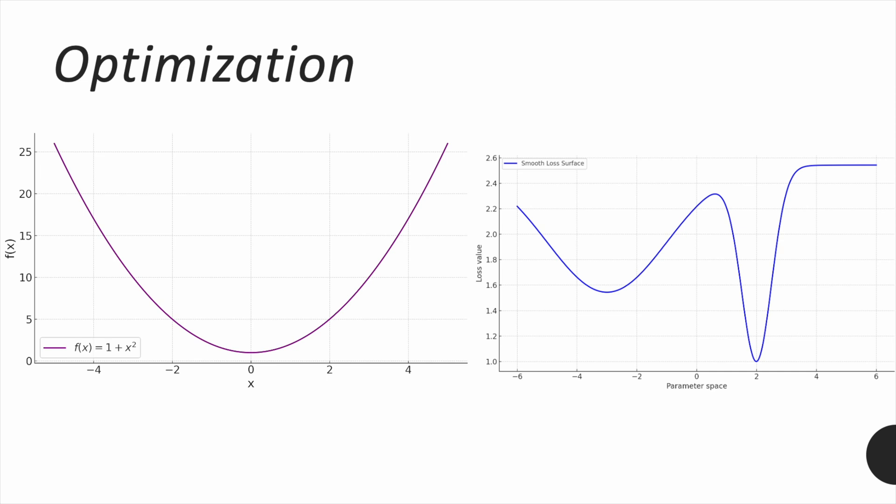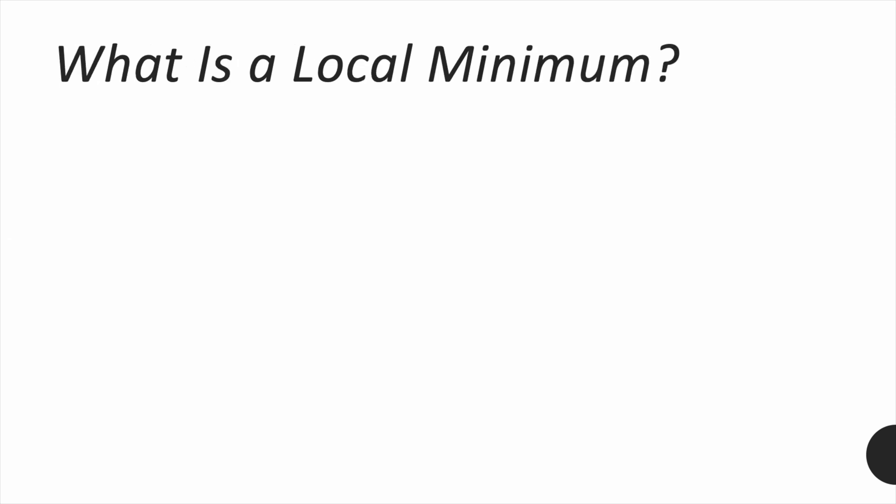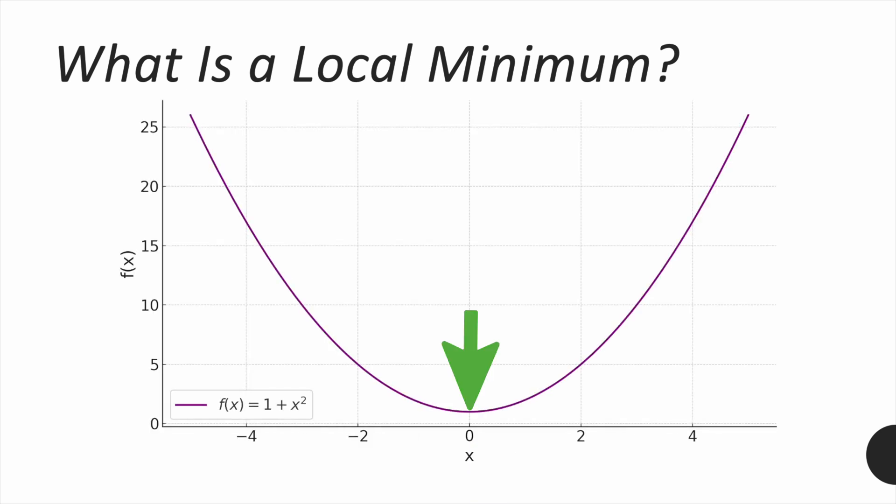Let's now talk more about local and global minima, starting with the local minimum. So, what is a local minimum? A local minimum is a point where the function has a lower value than all nearby points. In other words, the optimizer finds a spot where it can't go any lower by taking small steps in either direction. This is how most optimizers work.